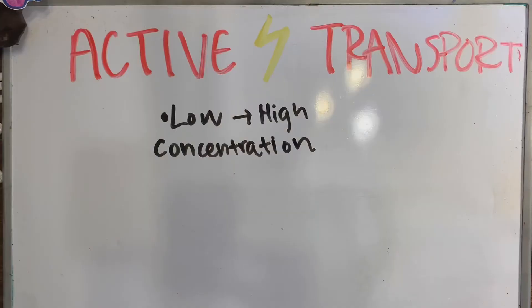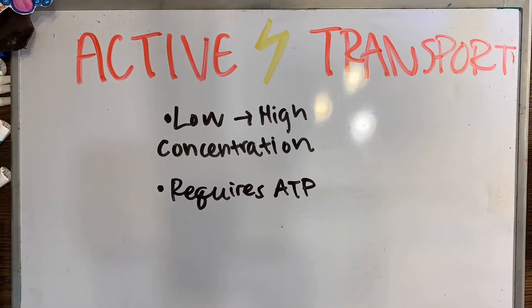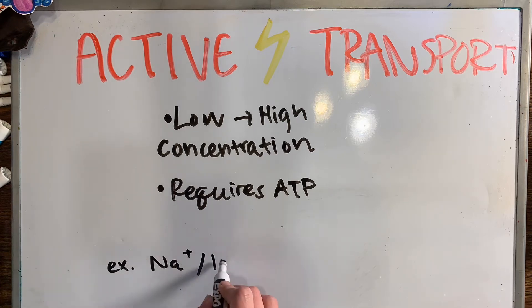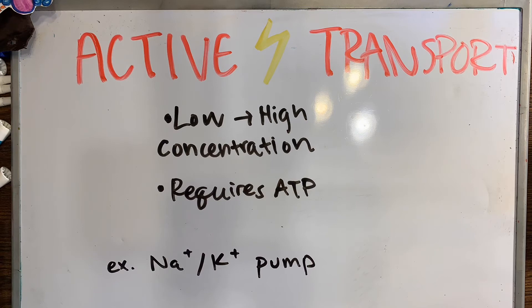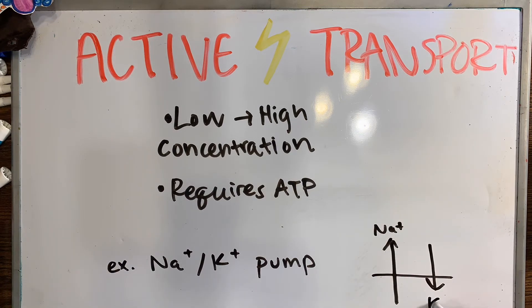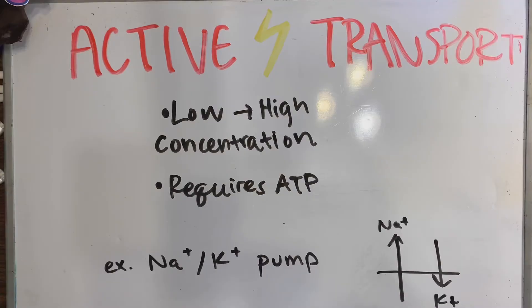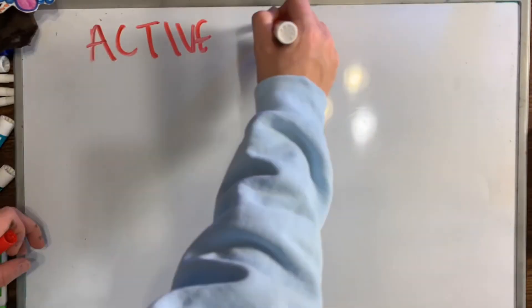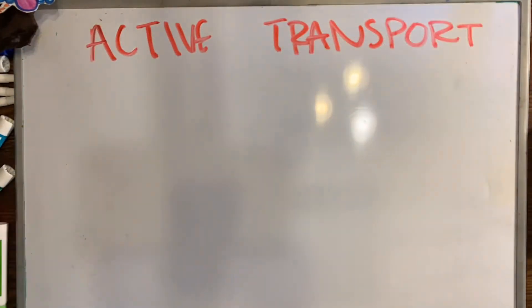Active transport flows from a low to high concentration and requires energy to overcome the concentration gradient. The most well-known example is the sodium-potassium pump, which pumps sodium ions out of the cell and potassium ions back into the cell. This generates a voltage across the membrane which helps the cell do work.